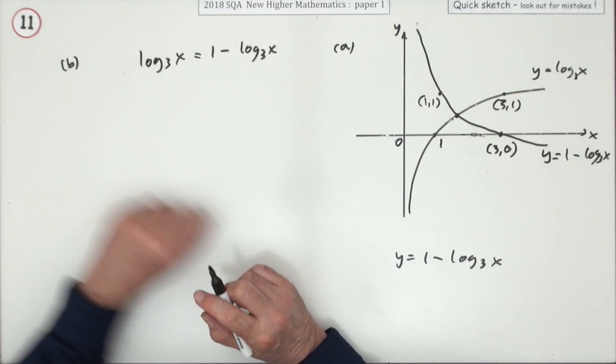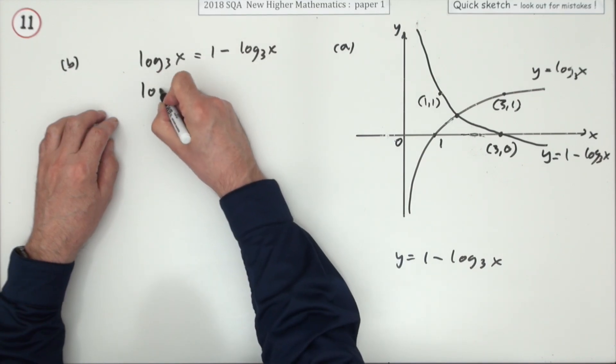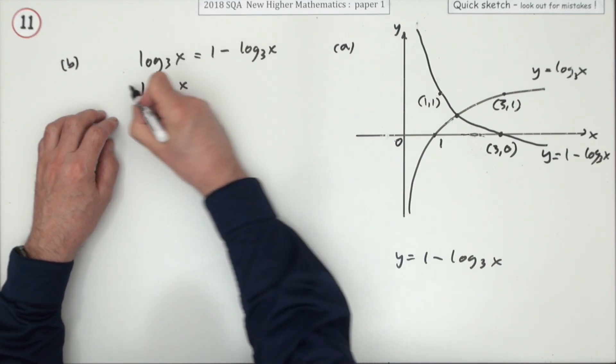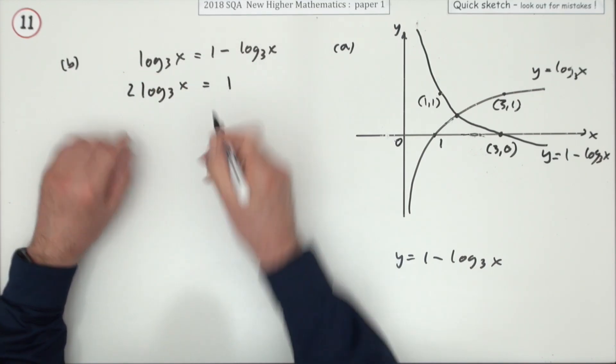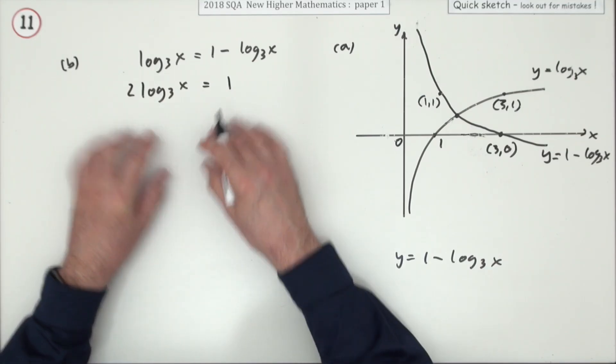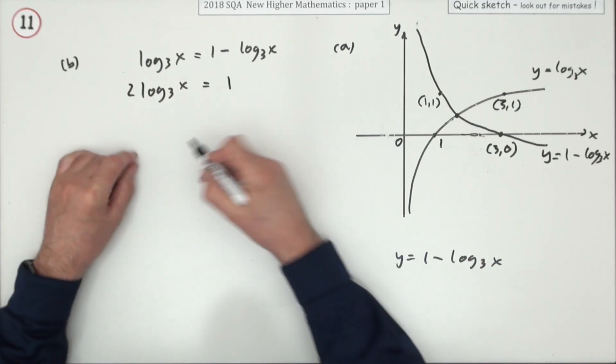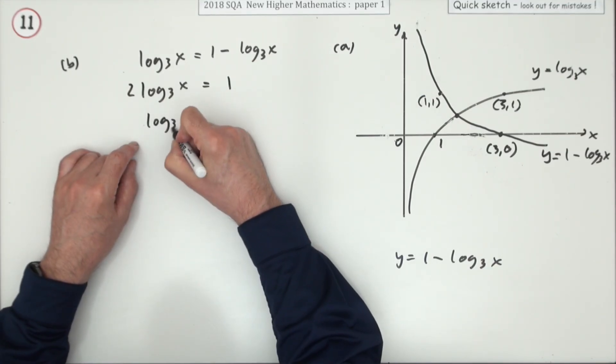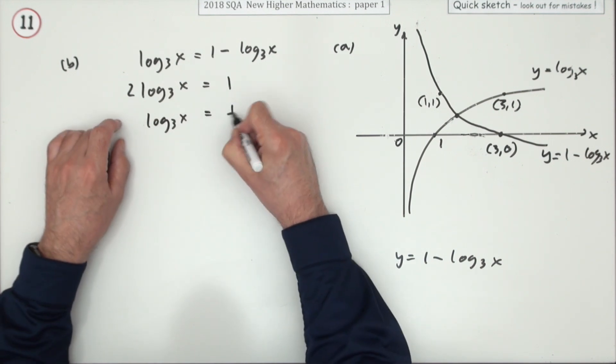Guessing that would be the first mark, bring that over, that means you've got two lots of log₃x to equal 1. There are several different ways of doing this, I think I'll just go through this route and take that across and make that a half.